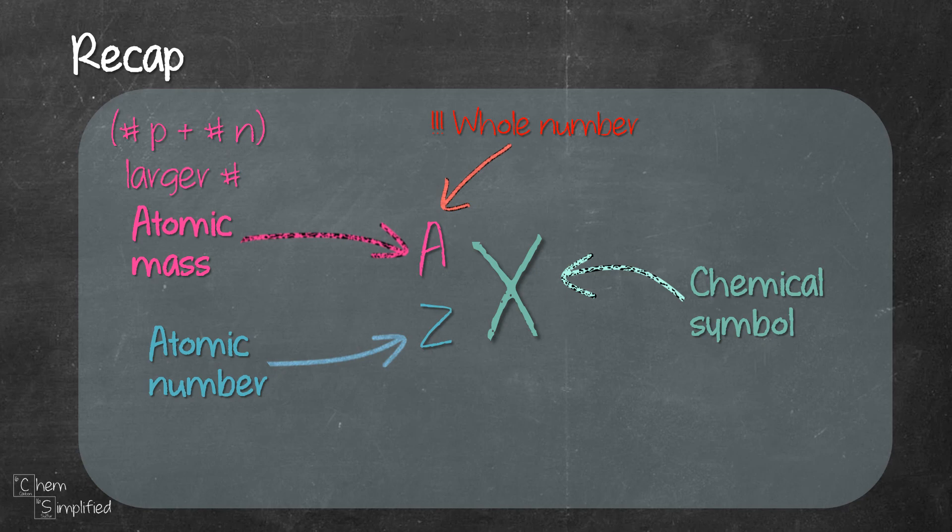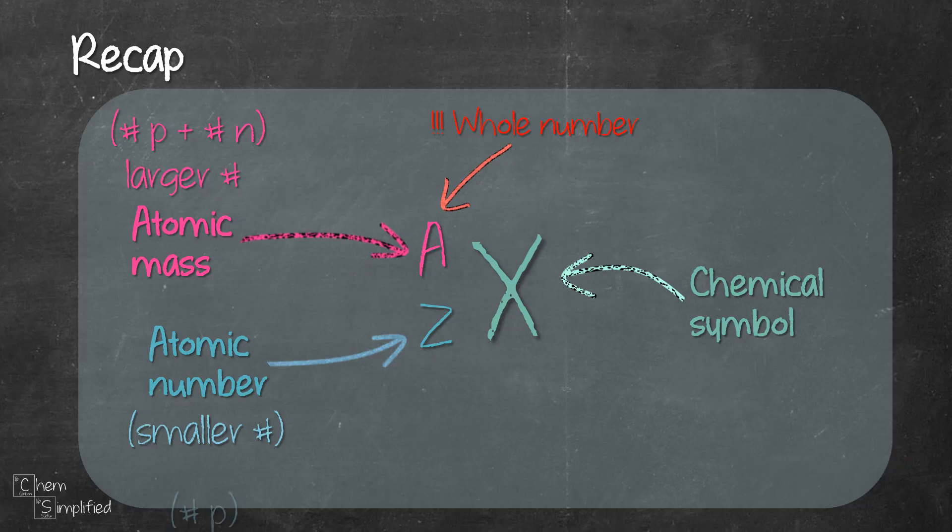Keep in mind that that's the total number of protons and neutrons and also this number must be written in whole number for isotopic symbol. Whereas the atomic number, that's the smaller whole number found in the periodic table, that is also the number of protons.